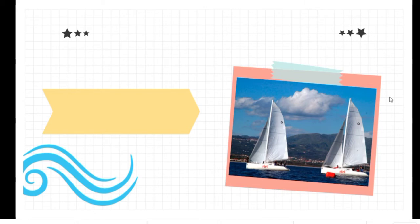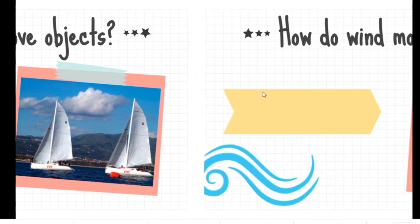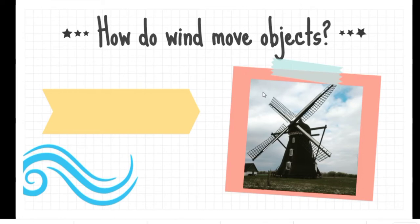All right, now let's look at the examples of how wind and water make things move. Look at this picture: wind makes sailing boats move. Next, look at this picture: wind also makes windmills move.